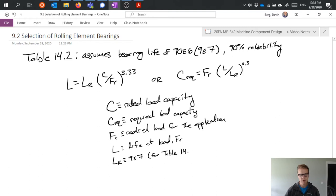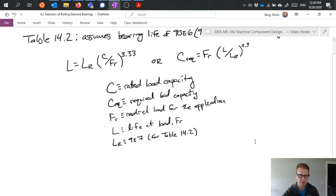L sub R is 9 times 10 to the seventh, specifically when we're talking about using table 14.2. Of course, if we're using a different source of data, a different catalog or table, that L sub R could be different, so this is something to keep in mind.